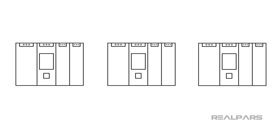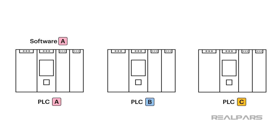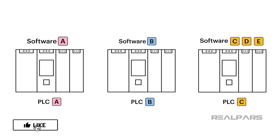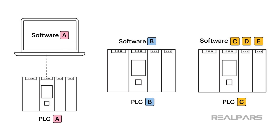Let's say that I have three PLCs. For the sake of simplicity, I'll call them PLC A, PLC B, and PLC C. PLC A can only be programmed with Software A. PLC B can only be programmed with Software B. PLC C can be programmed with Software C, but can also be programmed with Software D and Software E. So to program PLC A, I need to have Software A installed on my computer to be able to start writing codes.